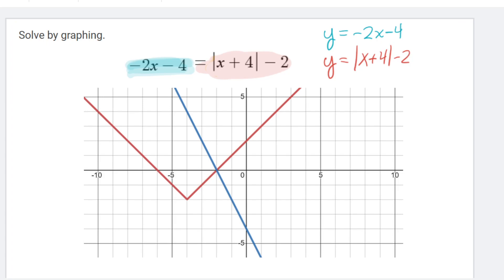Now that I have these two equations graphed out on Desmos, what I'm going to do is look for where they intersect. These are intersecting each other right here at this point. That's at the ordered pair negative 2, 0.